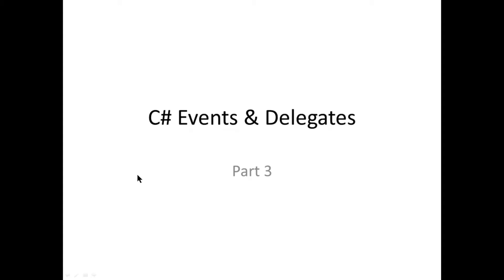This is part three in the three-part series on C# events and delegates. In this video we're going to try and get a better understanding about the fairly complex event and delegate code in .NET. They've got a lot of functionality in each line of code and it can get confusing, so we're going to try and break that down to understand what's actually going on.